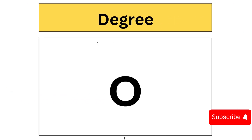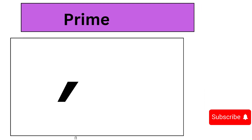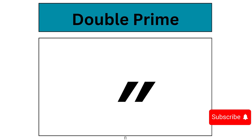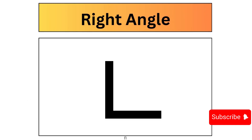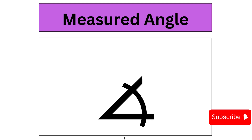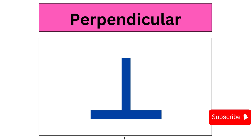Degree. Prime. Double Prime. Angle. Right Angle. Measured Angle. Parallel. Perpendicular.